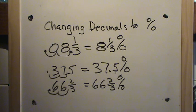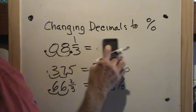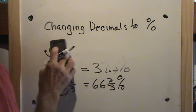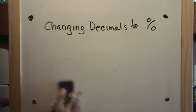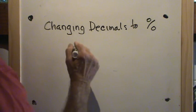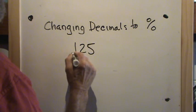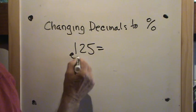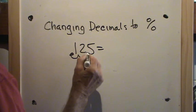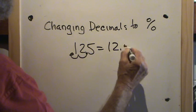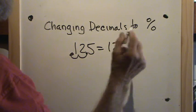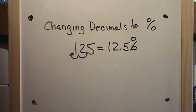That's the skill — to change any decimal to a percent, move the decimal point two places to the right and add a percent sign. Thank you very much for your attention.